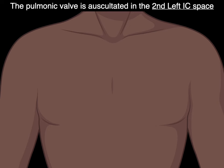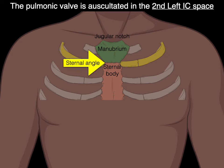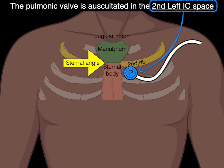Knowing where the second intercostal space is matters clinically. For example, the pulmonic valve is auscultated in the second left intercostal space. You find the jugular notch, then the sternal angle where rib two articulates, and below that is the second left intercostal space where you place the stethoscope. The aortic, mitral, and tricuspid valves are also located using this process for intercostal spaces.